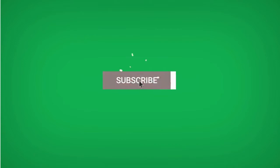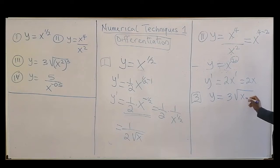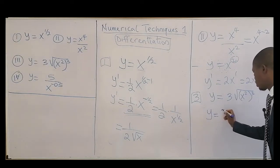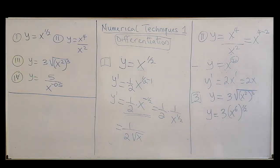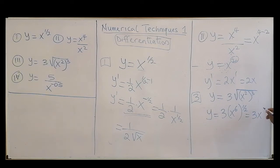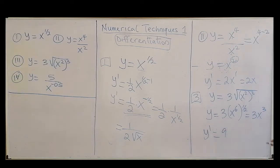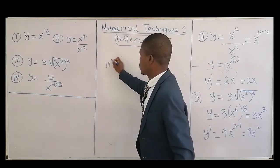Question three: y equals the cube root of x squared, all to the power three. Do the algebra first: 2 times 3 equals 6, so we have the square root of x^6. Removing the square root means raising to the power 1/2, so 6 times 1/2 gives x^3, then times 3... giving x^3. The differential coefficient: 3 times 3 is 9, and then power minus one: 3 minus 1 gives 9x^2.